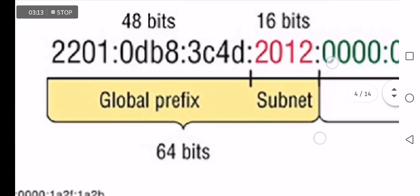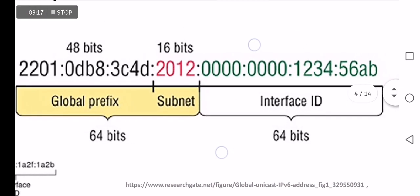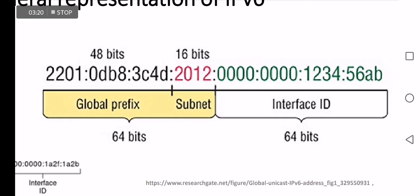Another view of the IPv6 representation shows two halves. The left half represents 64 bits for the network, including the global prefix and subnet bits. The global prefix or routable part with the site represents 48 bits, then the subnet is 16 bits, then 64 bits for the interface.